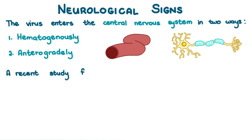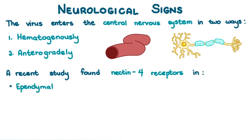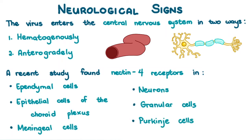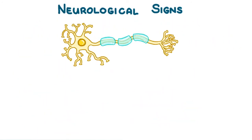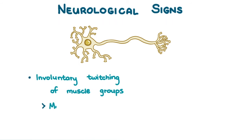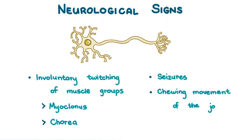A recent study found Nectin-4 receptors in ependymal cells, epithelial cells in the choroid plexus, meningeal cells, neurons, granular cells, and Purkinje cells. Here, they can cause demyelination and neuronal necrosis. The animal may exhibit signs such as involuntary twitching of muscle groups known as myoclonus and chorea, seizures, and chewing movements of the jaw known as chewing gum fits.